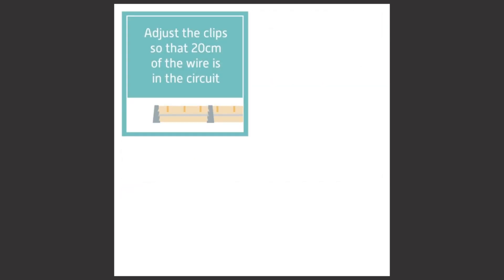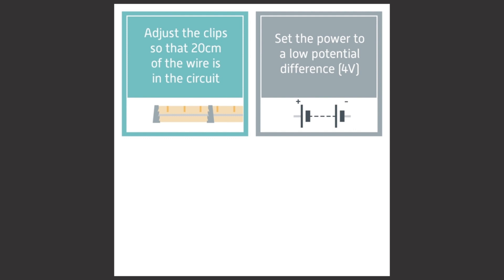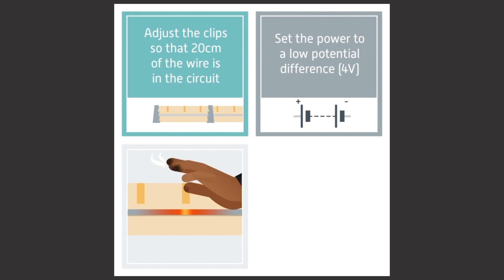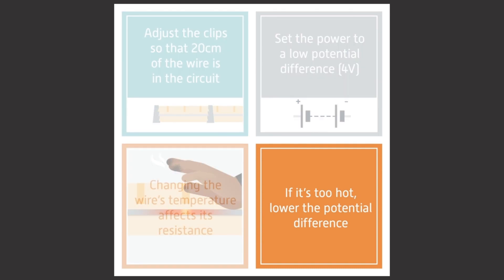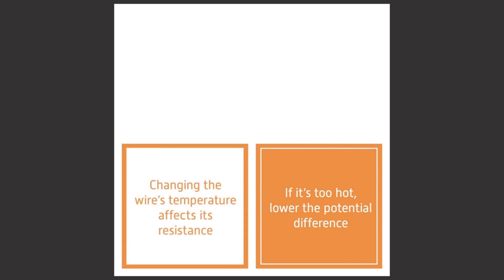First, adjust the clips so that 20 centimeters of the wire is in the circuit. Set the power supply to a low potential difference, such as 4 volts. Switch the power supply on and check that the wire is not getting too hot. Be careful not to touch the wire — just check it is not glowing hot. If it is getting too hot, lower the potential difference.